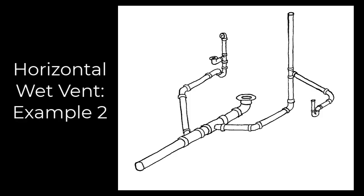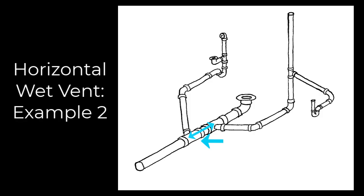Let's follow this downstream from the lavatory to make sure we're clear on what portions of the drainage are considered the vent. If we start at the sanitary tee where the lavatory connects and follow that downstream through the 90, through the 45, and into that three-by-two Y, the vent continues down to the last or farthest downstream fixture — which would be the tub connection. So the three-inch pipe from the three-by-two Y where the lavatory is, to the three-by-two Y where the tub branches off, is all considered horizontal wet vent.